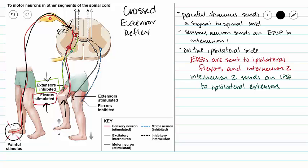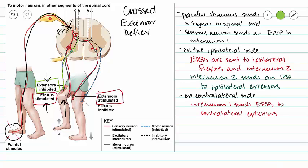On our contralateral side, interneuron 1 is going to send EPSPs to our contralateral extensors while interneuron 2 is sending IPSPs to our contralateral flexors. So on our contralateral side, we are stimulating our extensors and inhibiting our flexors to push that leg into the floor to hold us up.